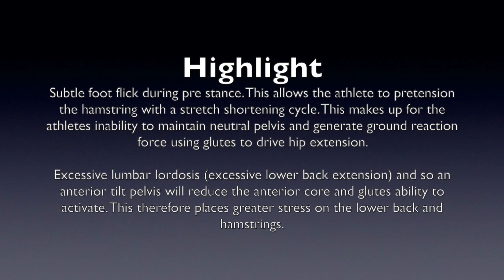Athlete B uses a suboptimal movement strategy in order to generate ground reaction force. As the athlete is in anterior tilt on ground contact, the anterior core and glutes are in a poor length-tension relationship and therefore the lower back and hamstrings take up the load acceptance. This highlights poor pelvic stability and therefore poor anterior core and glute strength and endurance.